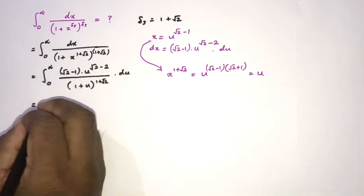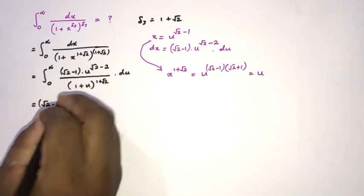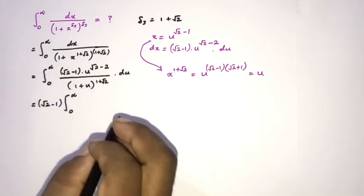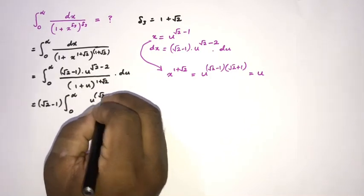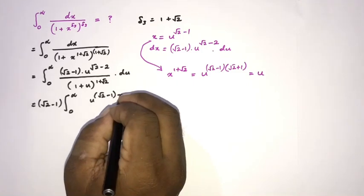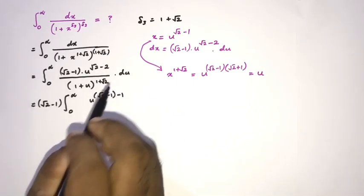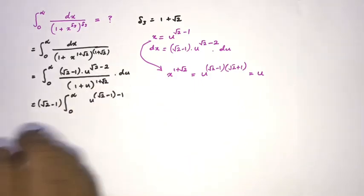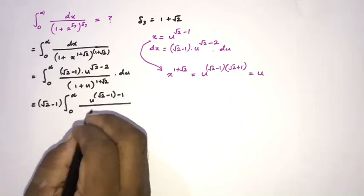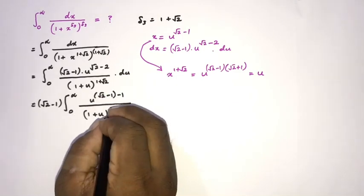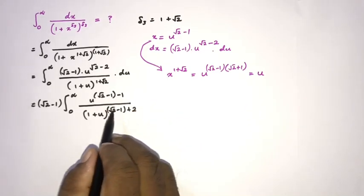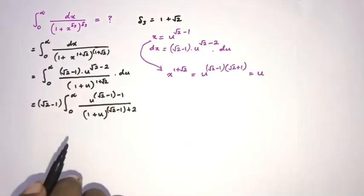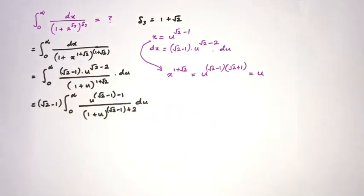We can take the constant square root of 2 minus 1 outside the integral sign. The numerator becomes u to the power square root of 2 minus 1, which we write as square root of 2 minus 1 minus 1, i.e. square root of 2 minus 2. The denominator is 1 plus u raised to the square root of 2 minus 1 plus 2, which simplifies to square root of 2 plus 1.